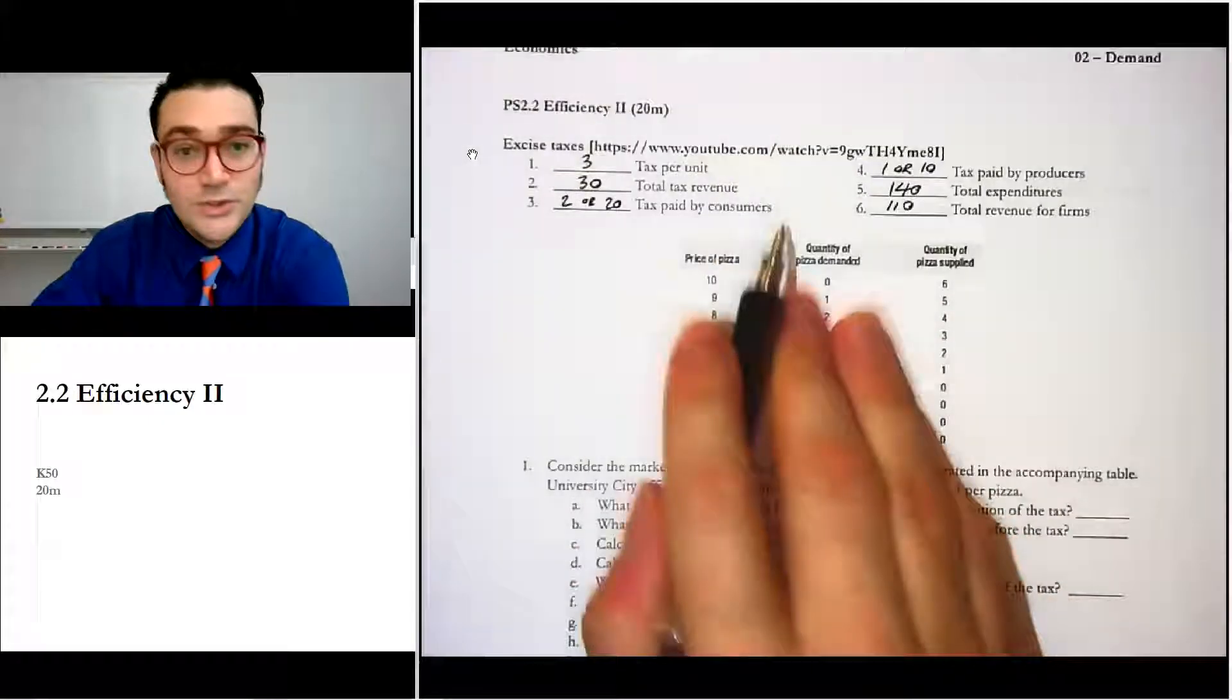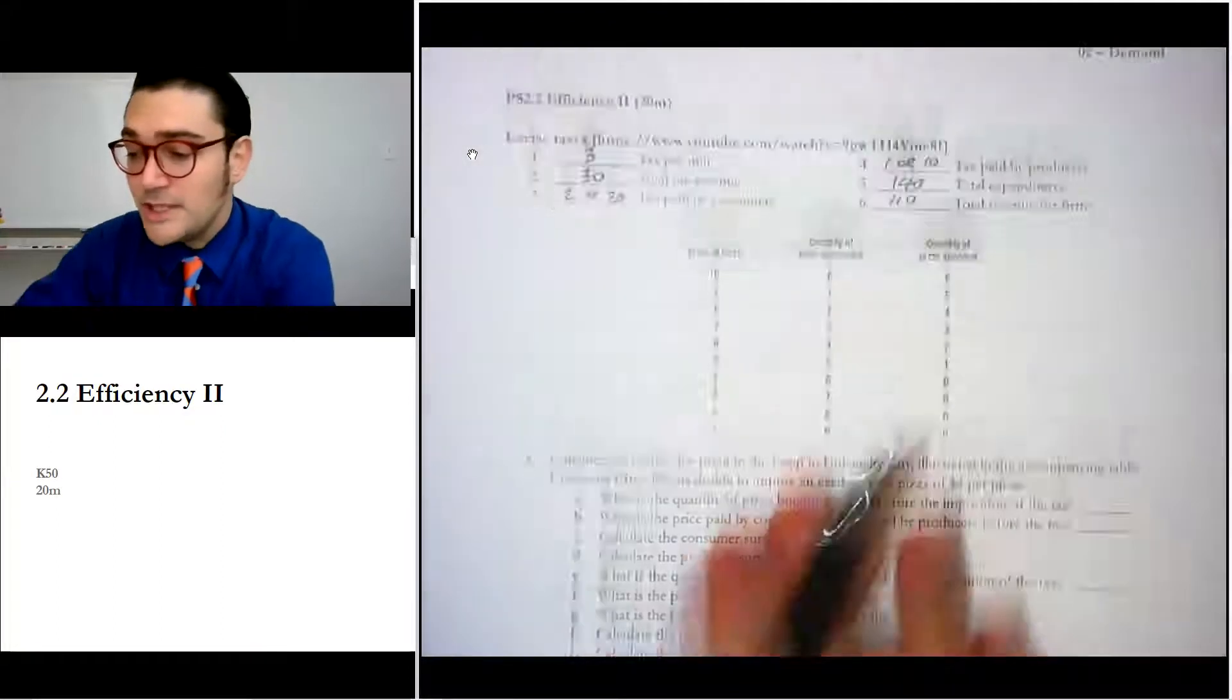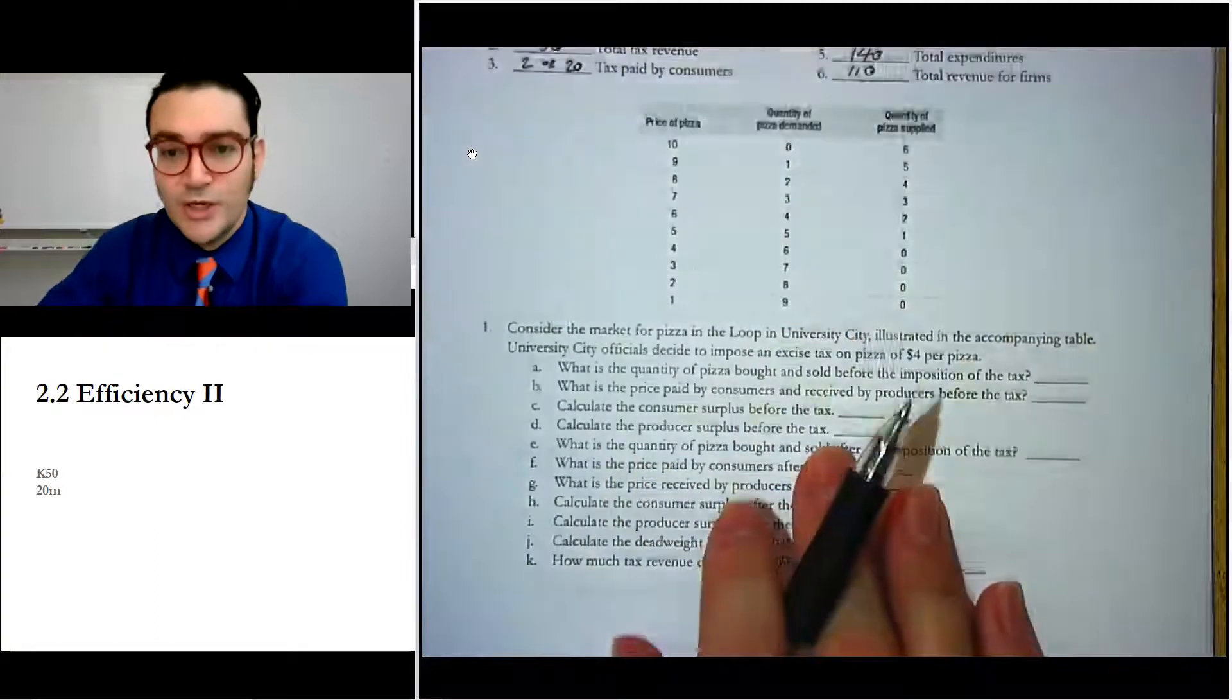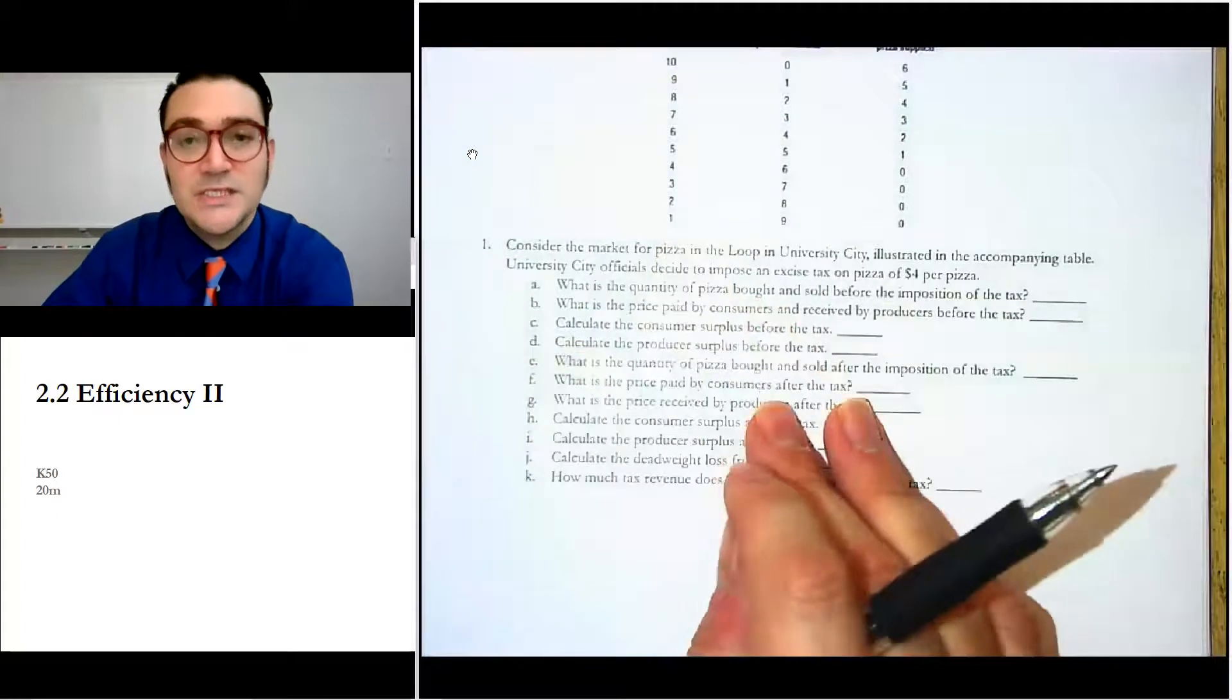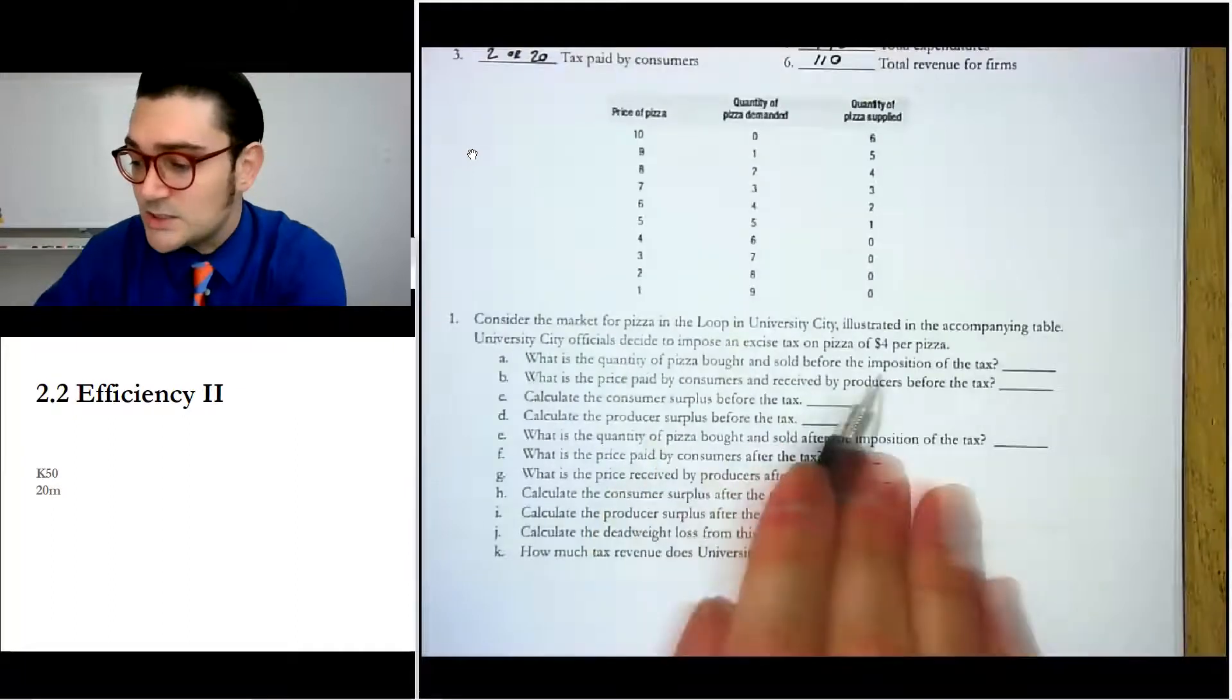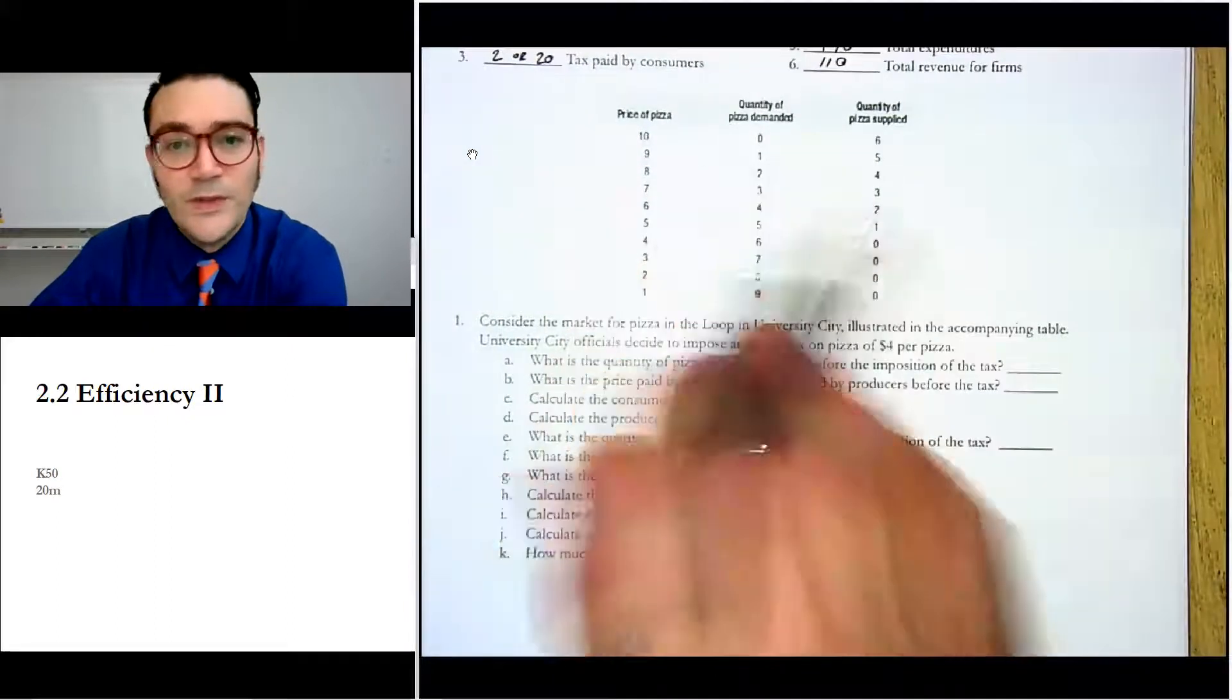Okay, so hopefully you were able to do these quick practice problems up here. He does the problem about halfway through that video. Now we're going to take a look at the price of pizza, quantity demanded of pizza, and quantity supplied of pizza. This is a market in University City for pizza, and it says city officials decide to impose a four dollar per pizza tax. The first thing that students sometimes struggle with is what do we even do with these numbers?